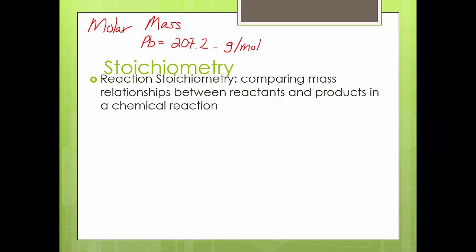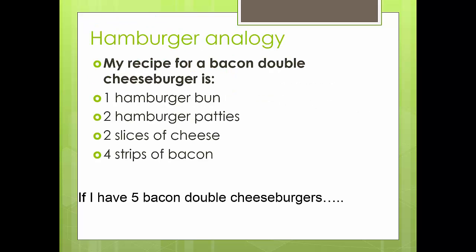So stoichiometry — it's math, it's the real part. You've been balancing equations, and now we're going to say: if I give you 10 grams of hydrogen, how much water can you make? So we have to look at the mass relationships. Let's use a little analogy — it's a recipe. Remember, a balanced chemical reaction is a relationship.